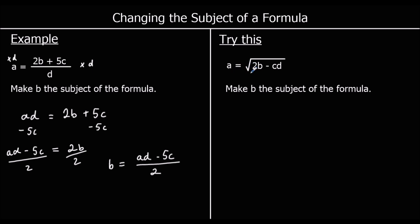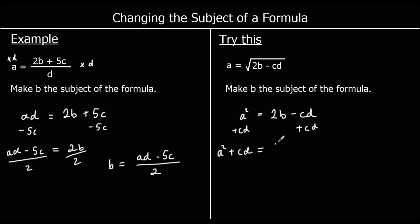In the next example, a equals the square root of (2b minus cd). We need to make b the subject. First, square both sides to get rid of the square root: a squared equals 2b minus cd. Then add cd to both sides: a squared plus cd equals 2b. Finally, divide both sides by 2: b equals (a squared plus cd) all over 2.